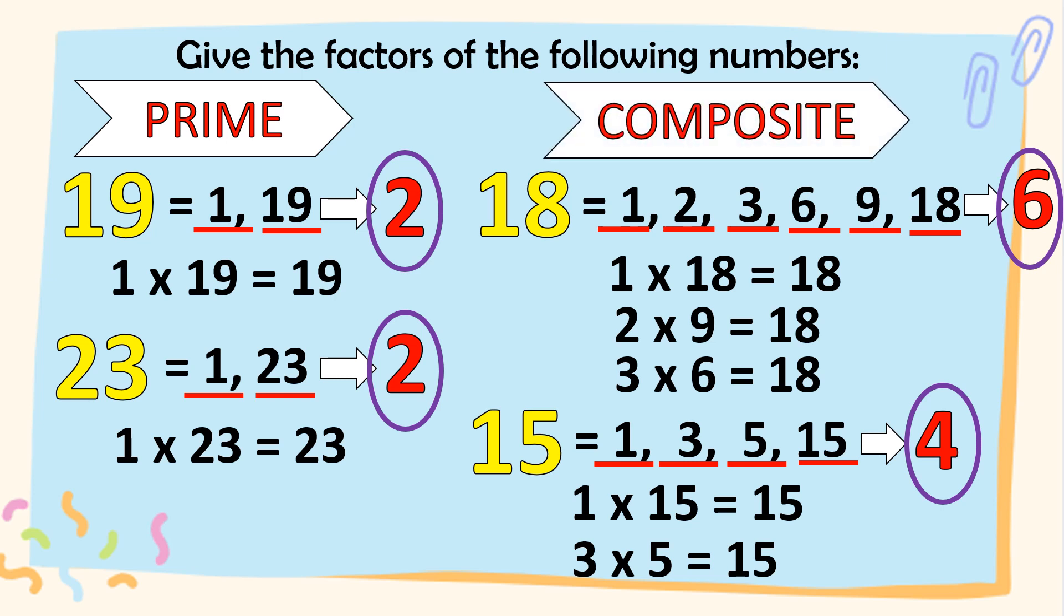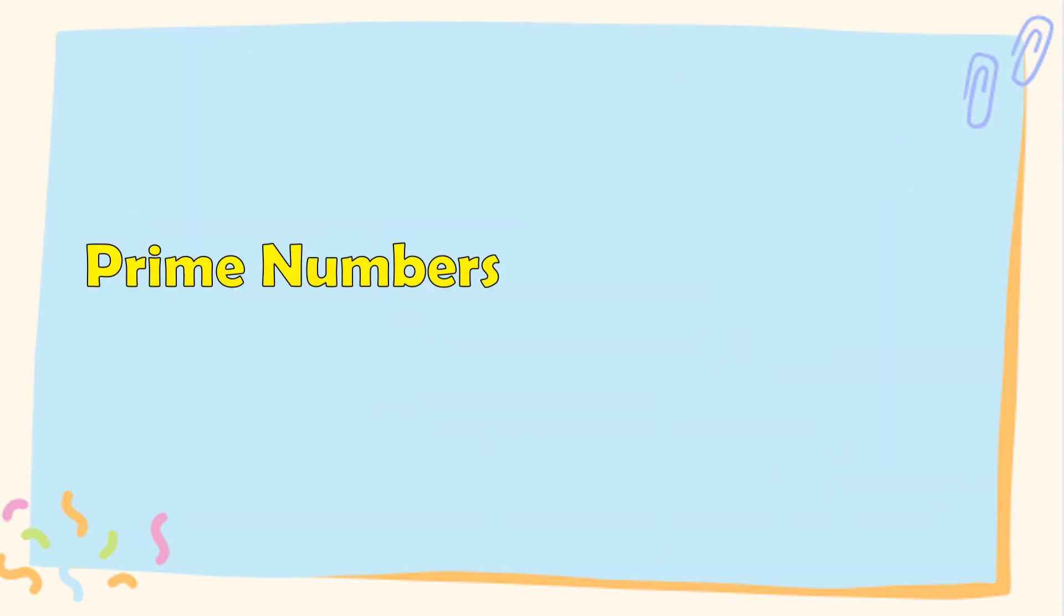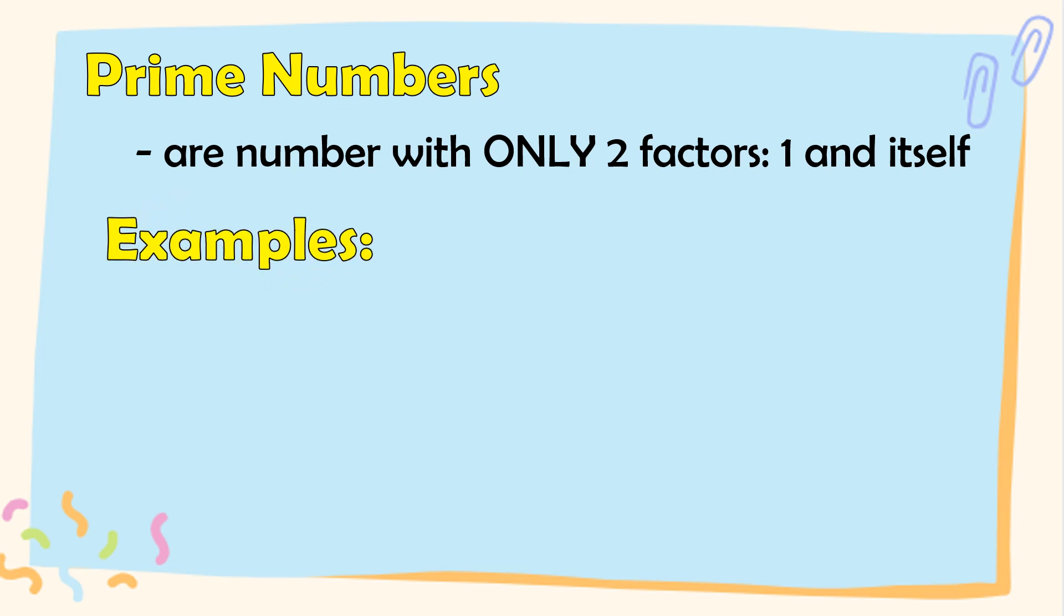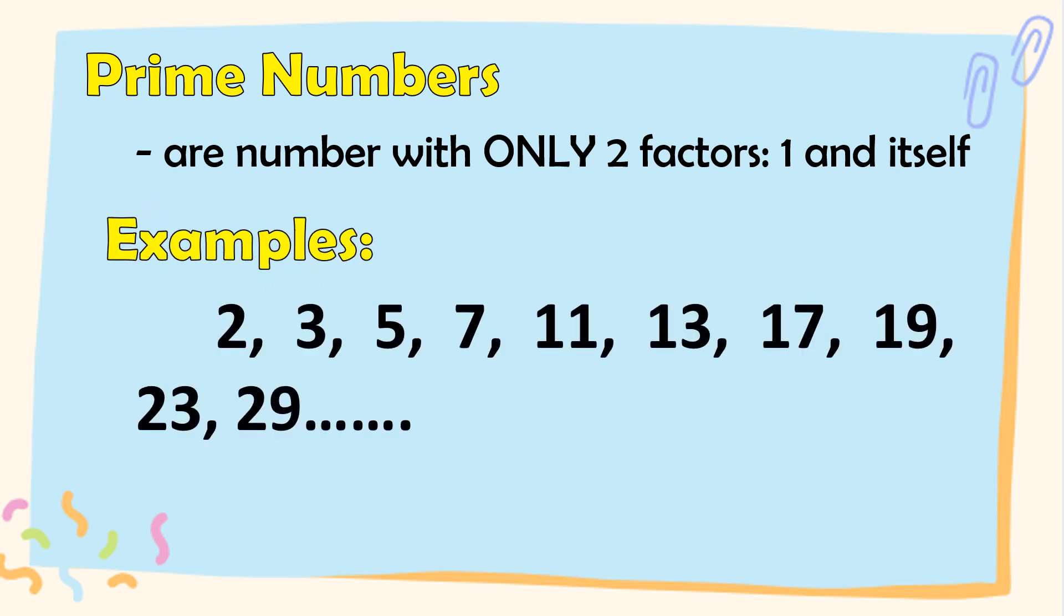Ano nga ba ang prime at composite? Kung inyong natatandaan kanina, yung 19 at 23, may dalawa lamang itong factors, yung 1 at ang kanilang sarili. Here are other examples of prime numbers: 2, 3, 5, 7, 11, 13, 17, 19, 23, 29, and so forth.